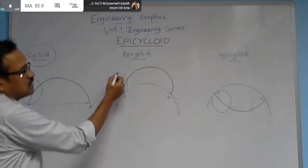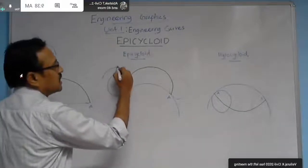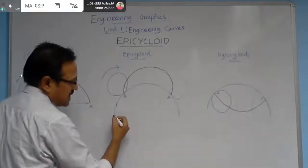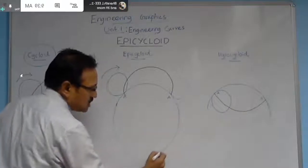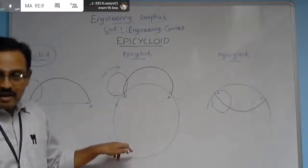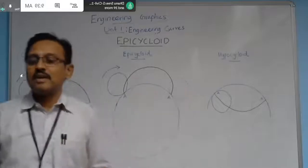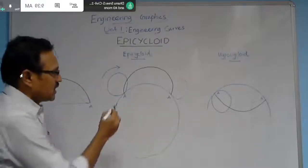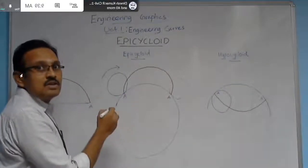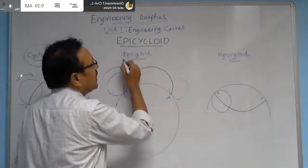For epicycloid: the same small circle, when it goes for one complete revolution in the clockwise direction above another large circle, a point A on the circumference of the small circle traces a curve. This curve is called an epicycloid.